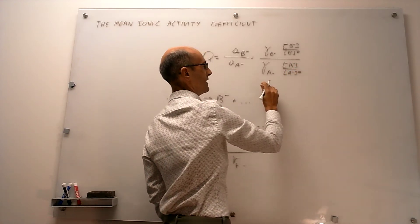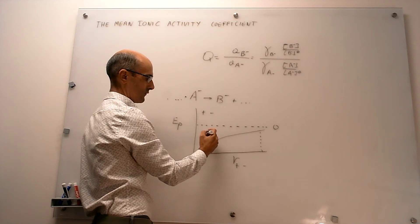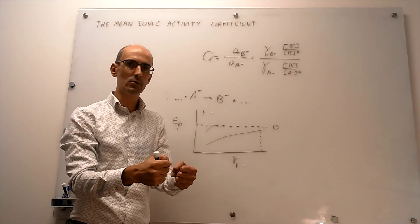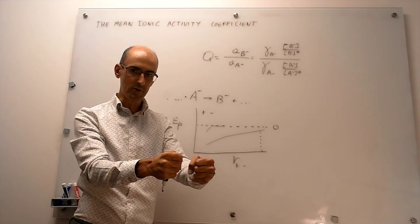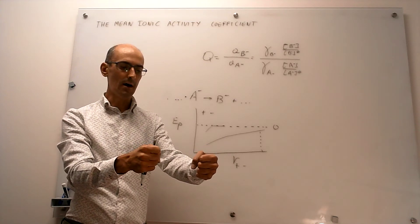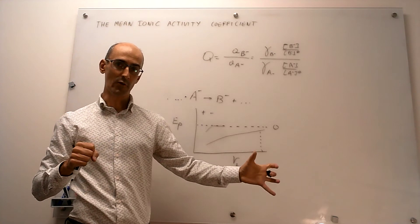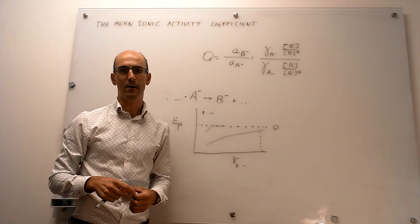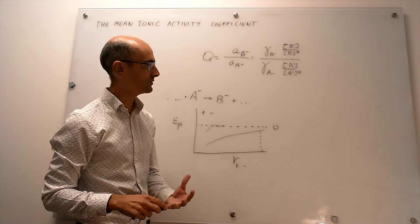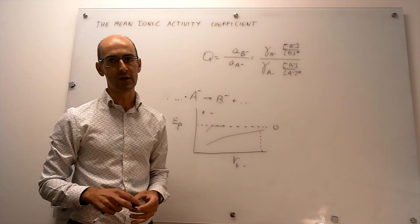For non-electrolyte solutions, the interaction between molecules dies off very quickly, so two molecules like methanol reach zero interaction at a relatively short separation. But for ions, you have to separate them much, much more before they no longer interact. This means stronger deviations from ideality in electrolyte solutions, and so activity coefficients — those gammas — are going to be much more commonly needed for electrolyte solutions than for non-electrolyte solutions.